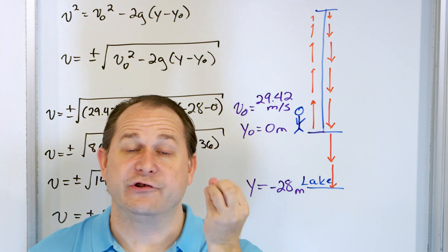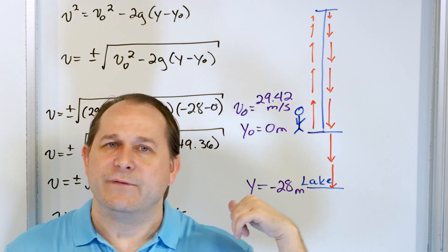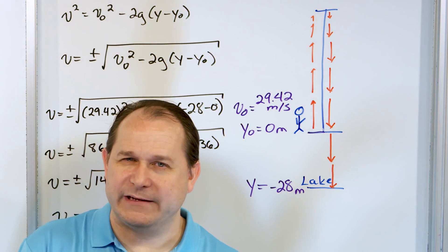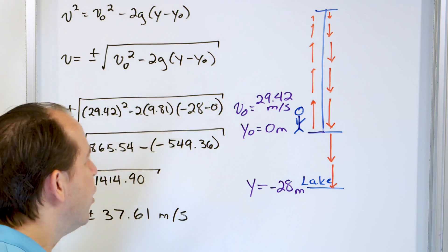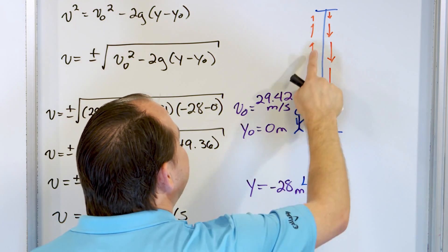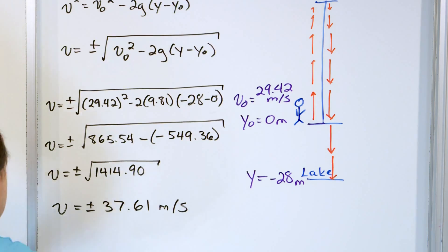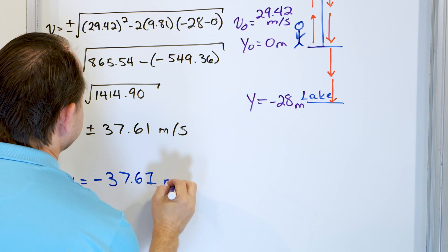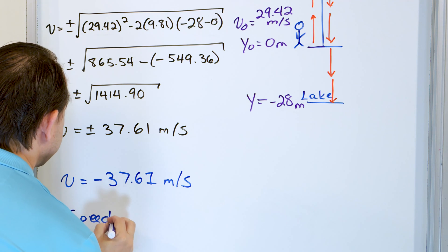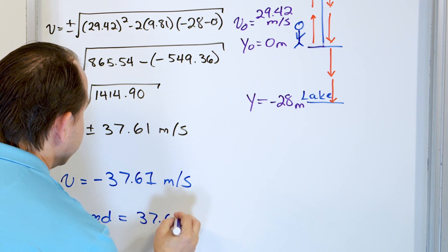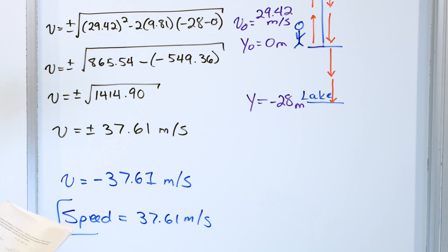Now, what does the plus or minus mean? Velocity was squared in the equation, so we get two algebraic answers. We know the initial velocity was positive — oriented upward — so when the rock comes down and hits the water, the velocity must be oriented downward, which is negative. So the velocity is negative 37.61 meters per second. However, the problem asked 'how fast is it moving,' which is speed — so we strip the sign: 37.61 meters per second. But it's better to report the velocity as negative 37.61, since that tells you the direction when it hits the lake.